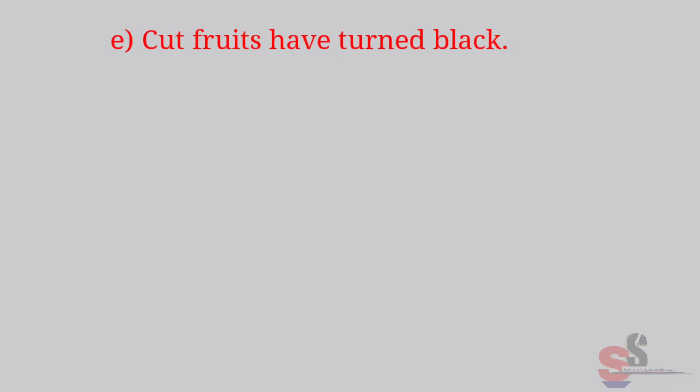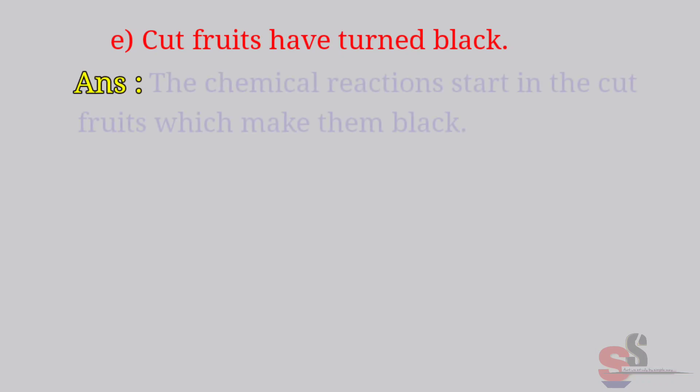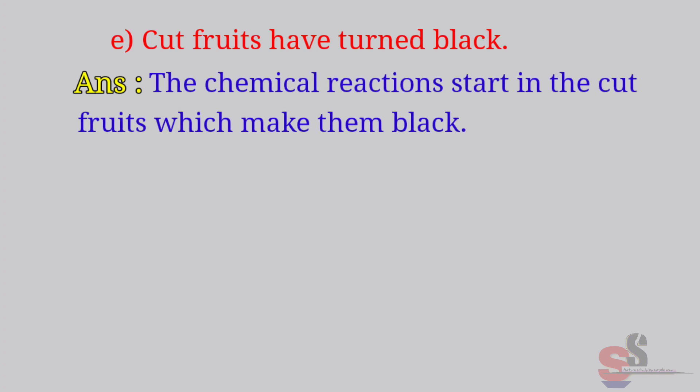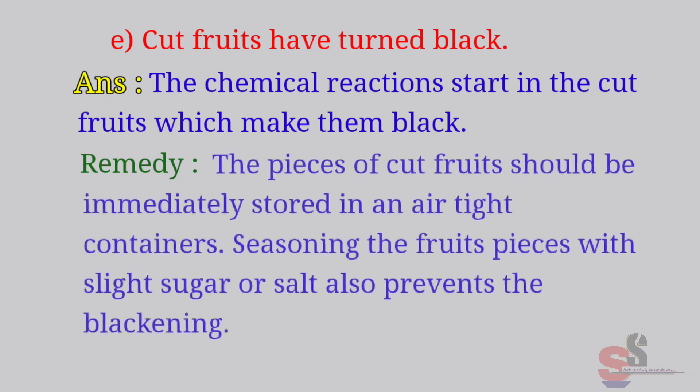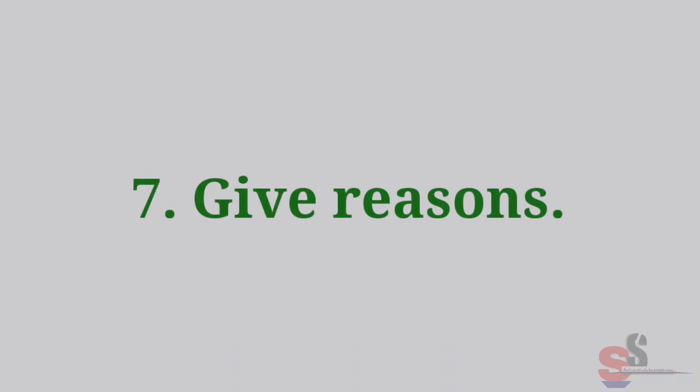E. Cut fruits have turned black. Answer: Chemical reactions start in the cut fruits which make them black. Remedy: The pieces of cut fruits should be immediately stored in airtight containers. Seasoning the fruit pieces with a little sugar or salt also prevents blackening.